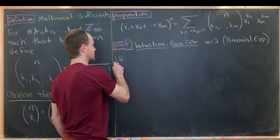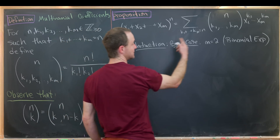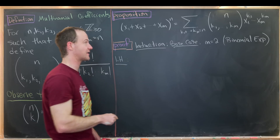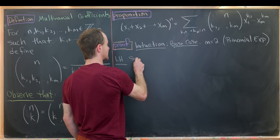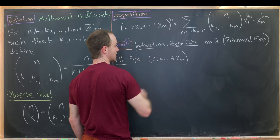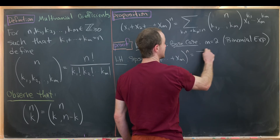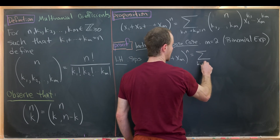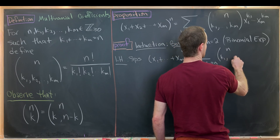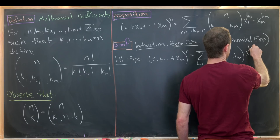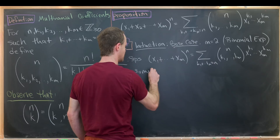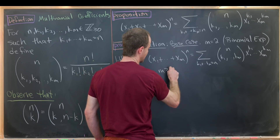That means we need to start with an induction hypothesis. While setting up our base case, we see that m was equal to 2, meaning we're inducting on the length of this sum. We suppose that this holds for some arbitrary m — in other words, we have x1 plus all the way up to xm to the n, equal to the sum involving the multinomial coefficient, with x1 to the k1 all the way up to xm to the km, for some m greater than or equal to 2.